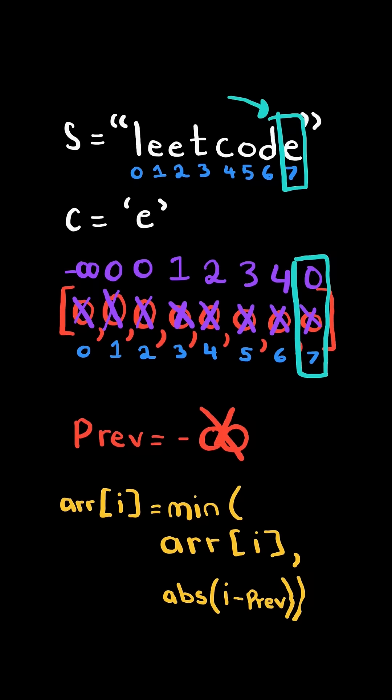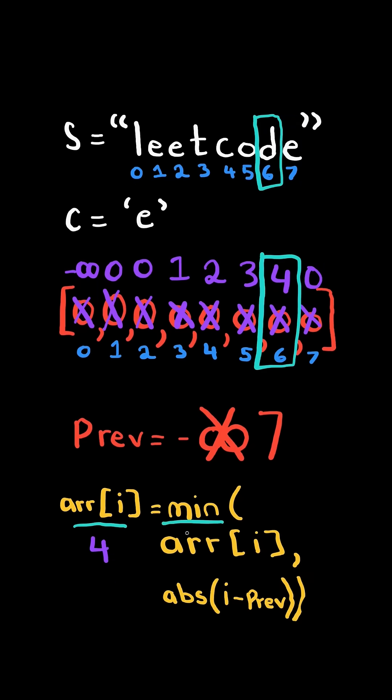We reached a c, so we update previous and update array at i to the minimum of itself or the difference. Then we update array at i to the minimum of itself or the difference. In this case, we update to one.